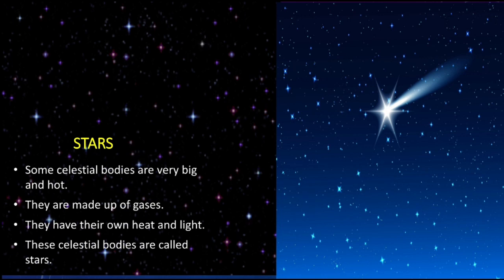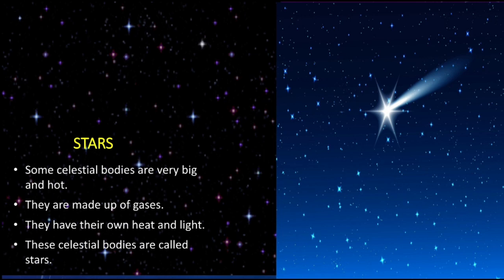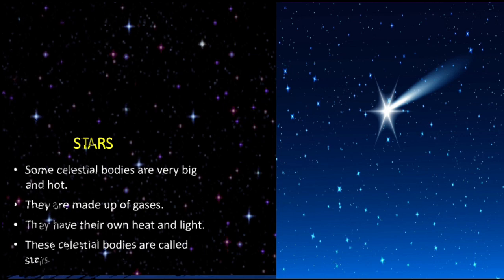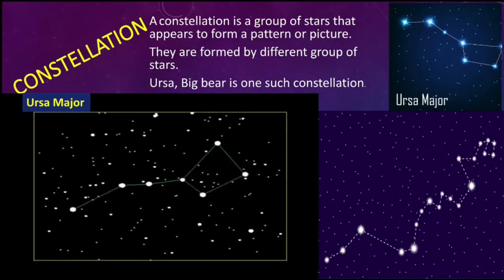Some celestial bodies are very big and hot. They are made up of gases and have their own heat and light — these celestial bodies are called stars. The light and brightness that we see from them is emitted in large amounts. We can see countless twinkling stars in the night sky and they are similar to the Sun.